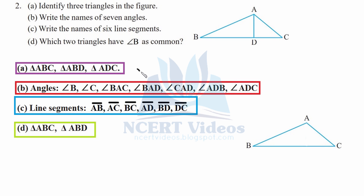Now part B — write the names of seven angles. In the simplified triangle ABC, the angles clearly visible are: angle B, angle C, and angle BAC. Point A has been split into two parts, giving us angle BAD and angle CAD.